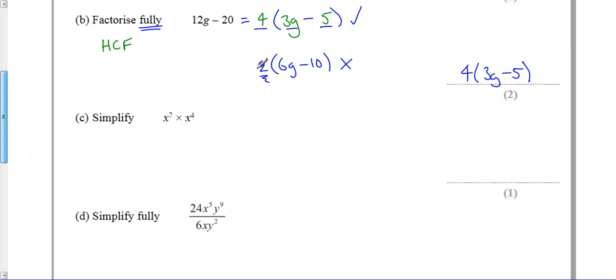Right, okay, let's move on to the next one. Well, there's a rule here, isn't there? There's a rule about indices, and that tells me that I add up the powers. So in this case, it's just x to the 7 plus 4, which is 11.